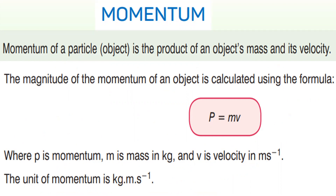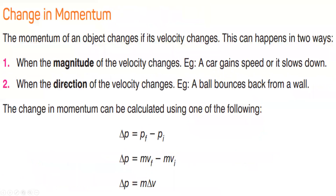We start with momentum. The definition of momentum is important: momentum of an object is the product of an object's mass and velocity. The formula is p equals m times v, and the unit of momentum is kg times m per second. This is our first slide from the first lesson.